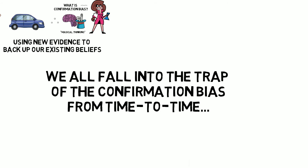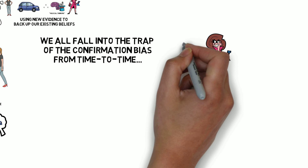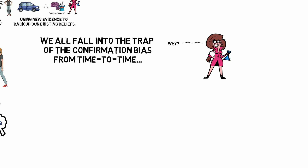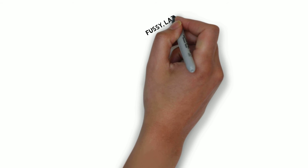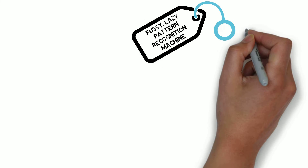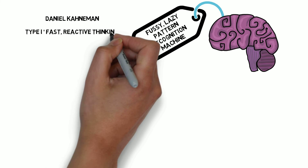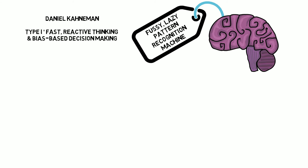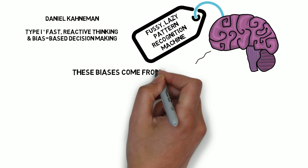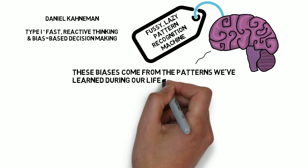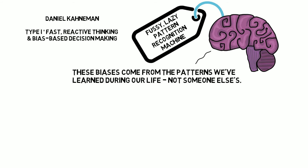We all fall into the trap of making assumptions due to confirmation bias along with a whole heap of other cognitive biases. Because our brain is kind of like a fussy, lazy pattern recognition machine. Its default mode is what Daniel Kahneman refers to as Type 1 thinking, and it is what we generally use to navigate the world around us and make quick decisions. These decisions are made based on biases created from the information available to our individual brain to identify patterns it has learned over our lifetime.